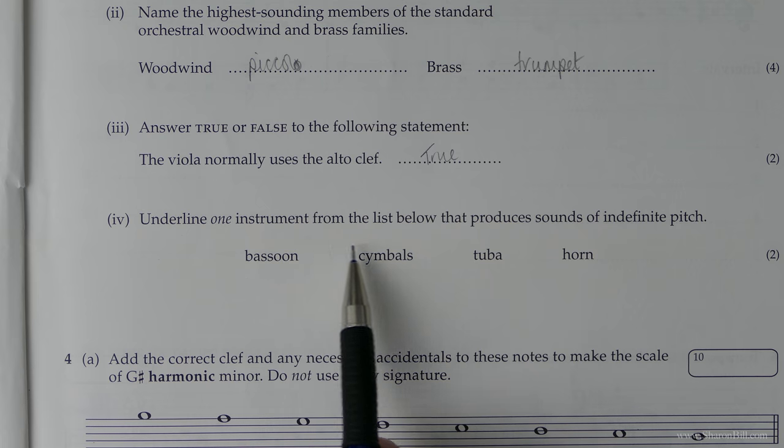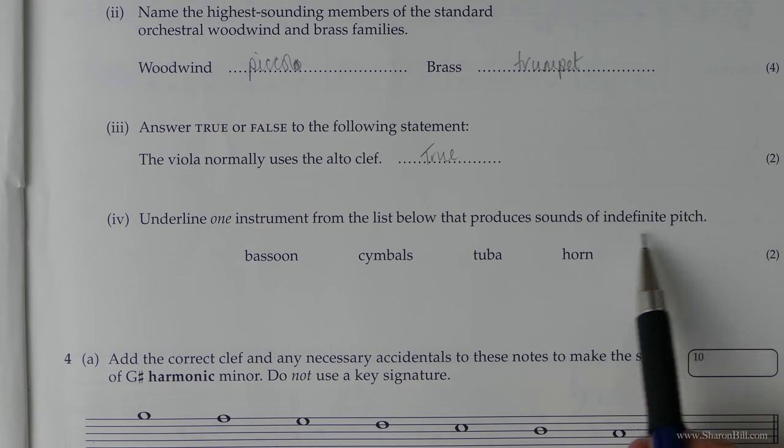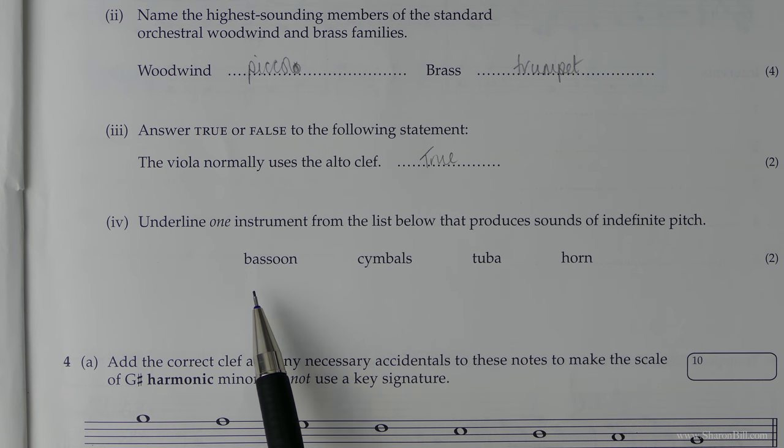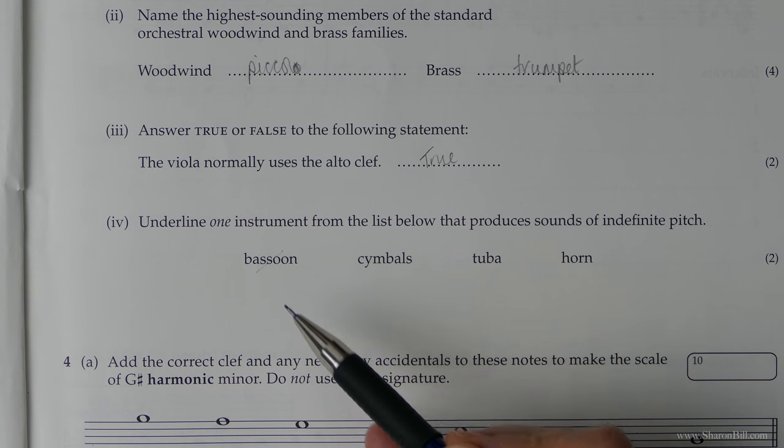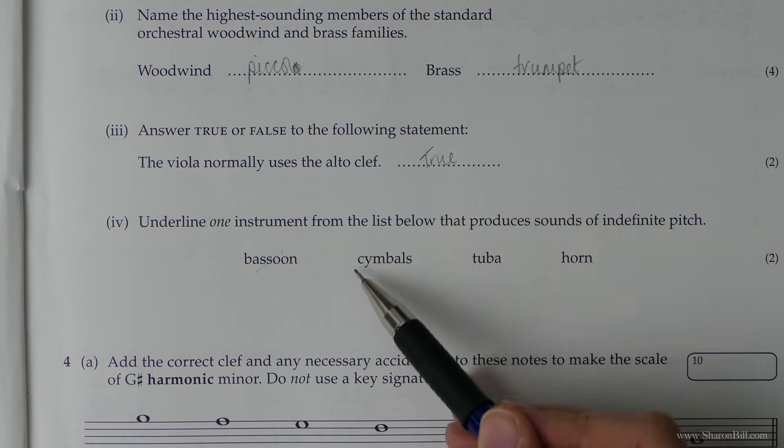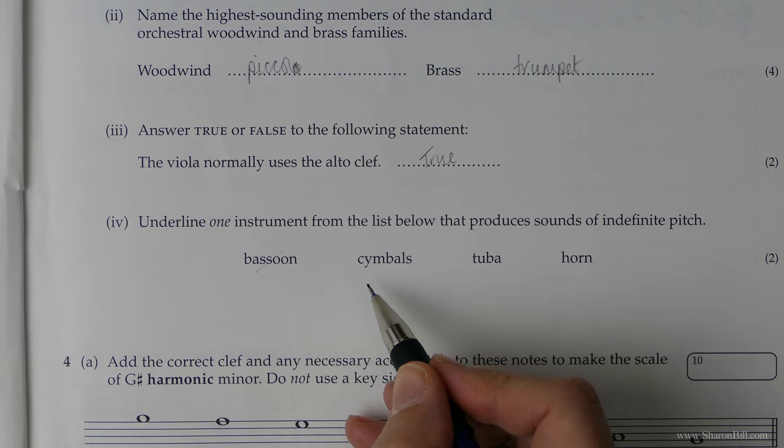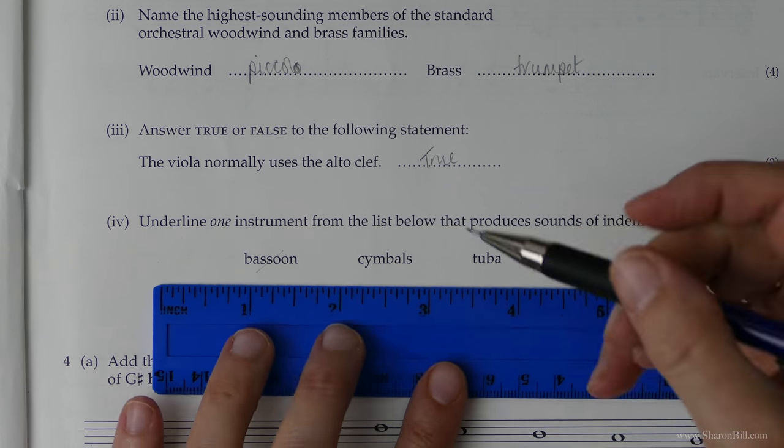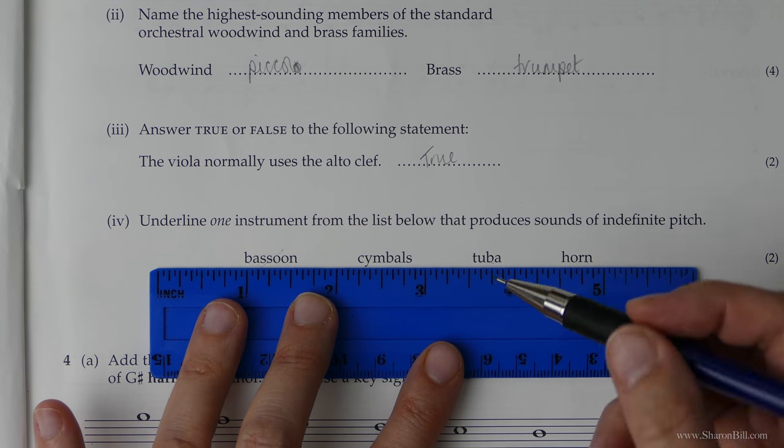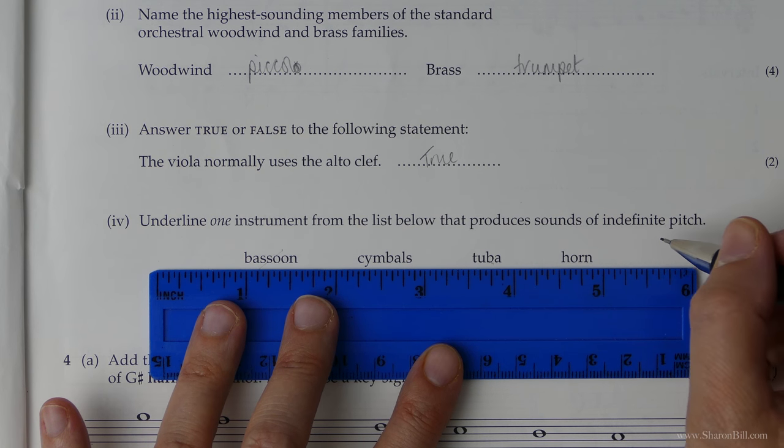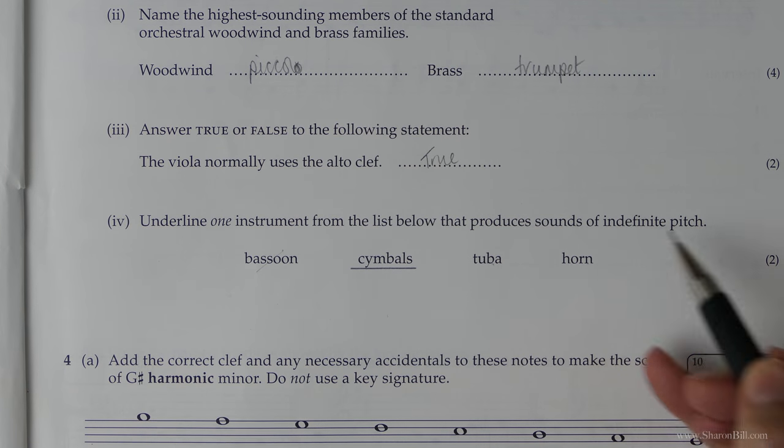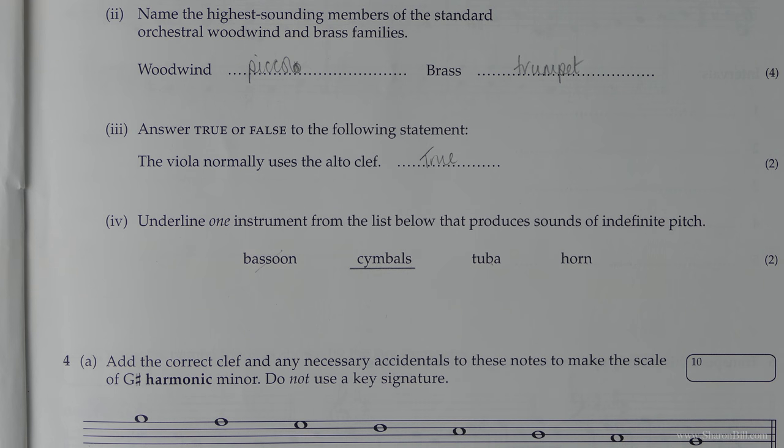Underline one instrument from the list below that produces sounds of indefinite pitch. So indefinite pitch is kind of untuned. Bassoon is definitely tuned. You can play pitch. Cymbals is the answer because you couldn't play a tune on that. It's untuned percussion. Tuba, that's a pitch instrument. Horn, that's a pitch instrument. When it says indefinite pitch, it's usually going to be relating to untuned percussion. Just another way of saying the same thing. Indefinite pitch or untuned.